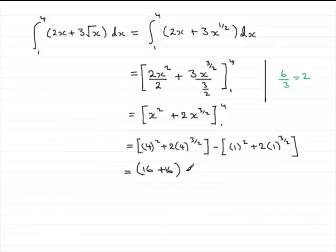And we now minus 1 squared, which is 1, and again, we've got the square root of 1, all cubed. Square root of 1 is 1, cube it, you've got 1, 2 times 1 is 2, so you've got plus 2. Work this out, you've got 32 minus 3, and that's going to come to 29.